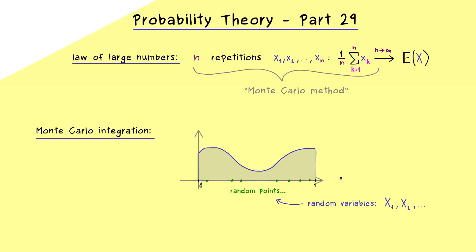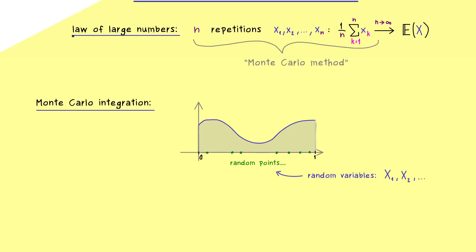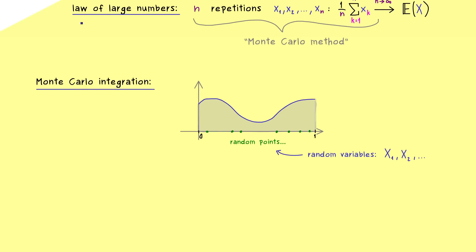But before we discuss how to get that I first want to explain again the concrete statement of the weak law of large numbers. In fact this is exactly what we will need for this video here. And maybe to avoid confusion let's call the random variables here Yₖ.